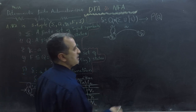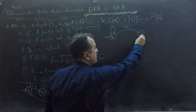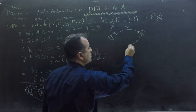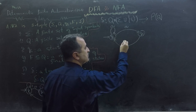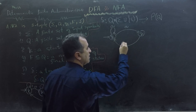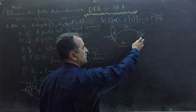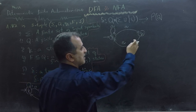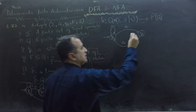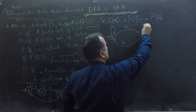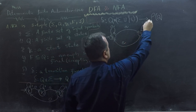Similarly, in case of NFA, we can also change our state via empty string or epsilon input. So we have not consumed any input and we have transitioned from state Q1 to Q0.